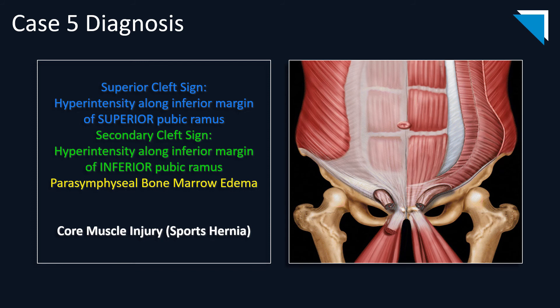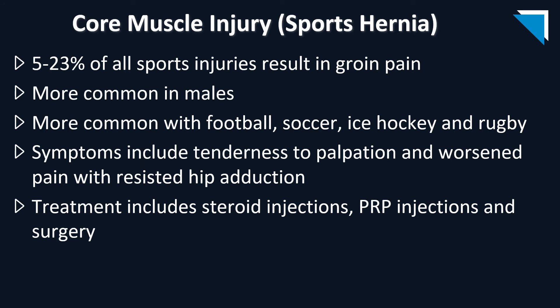The diagnosis is a core muscle injury, otherwise known as a sports hernia — though 'sports hernia' is a misnomer, so the preferred term is now core muscle injury. It is seen in 5 to 23% of all sports-related injuries resulting in groin pain. It's most commonly seen in males and in sports such as football, soccer, ice hockey, and rugby. Patients present with tenderness on palpation worsened with hip adduction. Treatment includes steroid injections, PRP injections, or surgery in extreme cases.